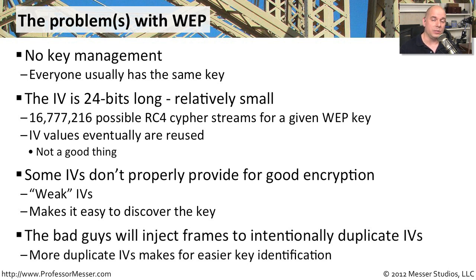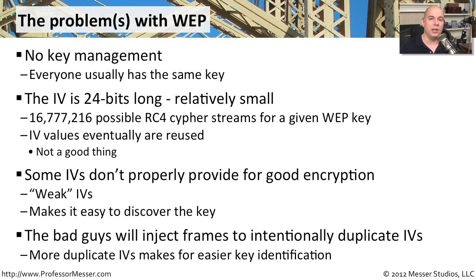Another thing that bad guys would do is put their own frames onto the network in an effort to increase the number of initialization values being used. The more IVs going across the network, the easier it was for them to begin decrypting this information. These days, you can plug in, listen to a WEP network, and in a matter of minutes you'll be able to tell what the encryption key is for the entire WEP network. You're then able to see everybody's information in plain text and decrypt everything going over that network. That's why we say don't use WEP — that's not a good idea at all.